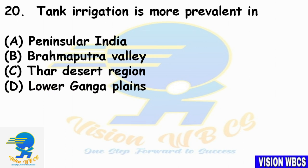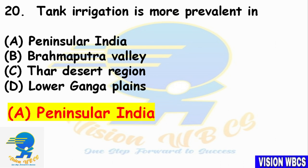Last question — Question 20: Tank Irrigation is more prevalent in? Option A — Peninsular India. Option B — Brahmaputra Valley. Option C — Thar Desert Region. Option D — Lower Ganga Plains. Tank Irrigation is most prevalent in Peninsular India. That's all for today — 20 questions of Set 44 complete. Next set will cover Paper 4. All the very best, study hard, meet you in the next class. Thank you!